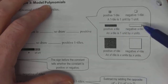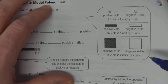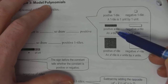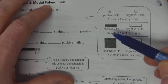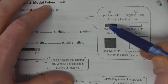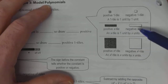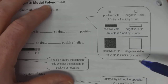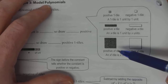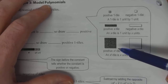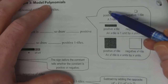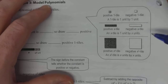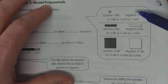We've got these little bars — these rectangles that we can draw — and that's going to represent x. Again, if it's shaded it's positive, if it's hollow it's negative. All of the shaded are positive, all of the hollow are negative.